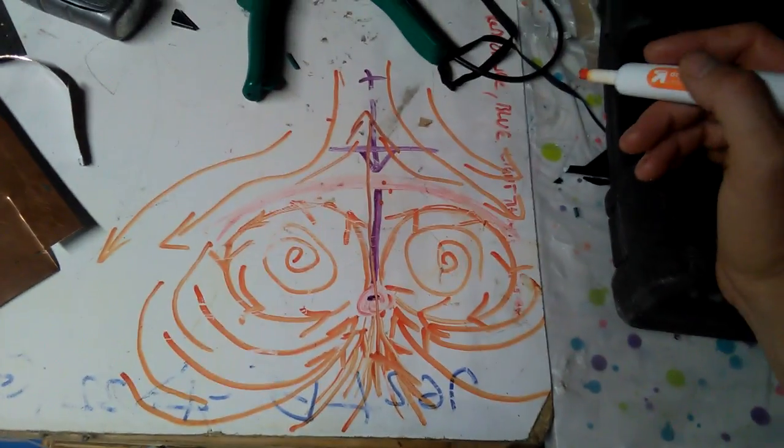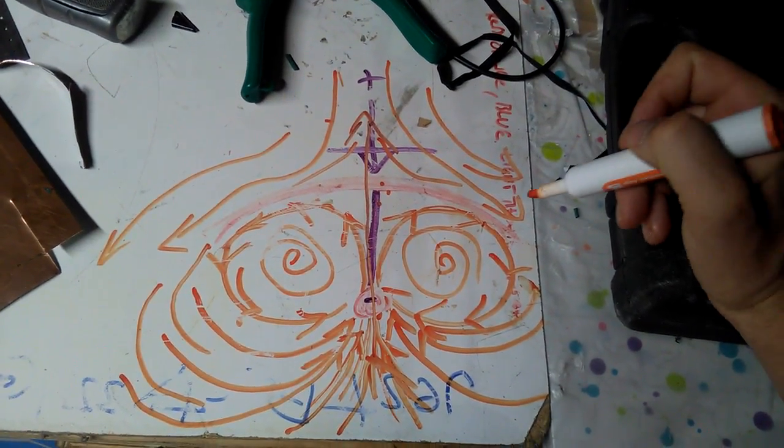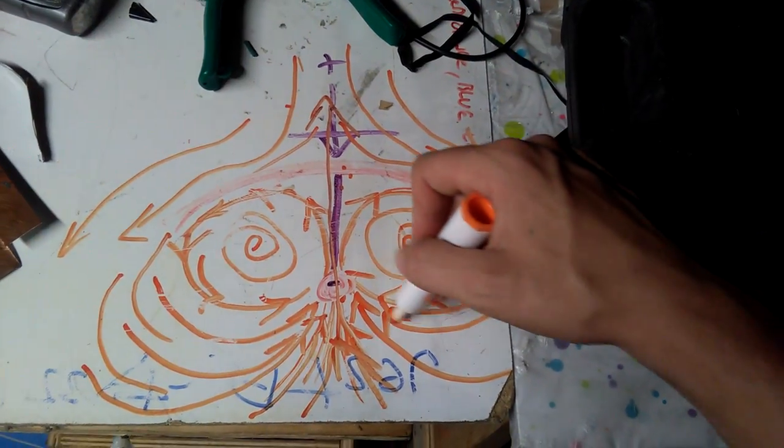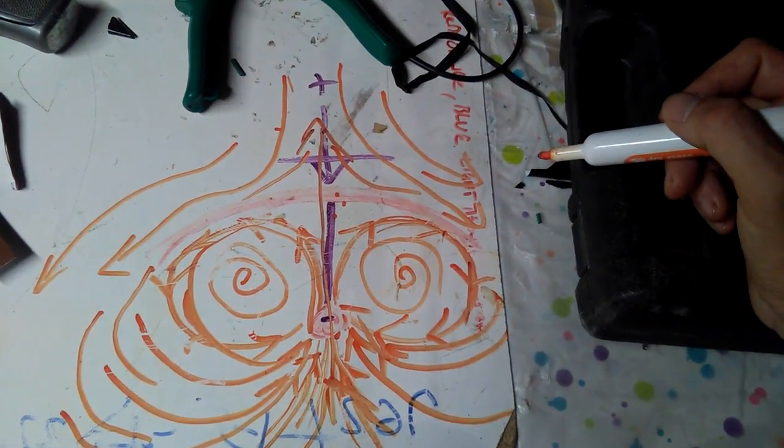And Townsend Brown was using this other side of electrostatics, which he called electrokinetics for anti-gravity. Well, this seems to be definitely experimental proof that we're getting...